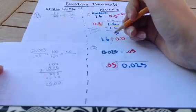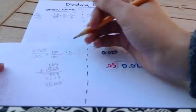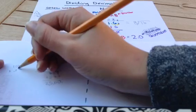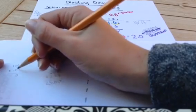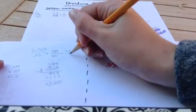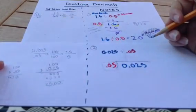So I get a new numerator of 2.5. If I multiply 100 times 0.05, 0, 0, 5. Move my decimal place twice. I now have a whole number of 5.